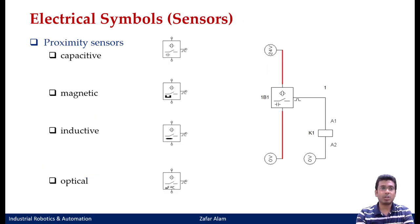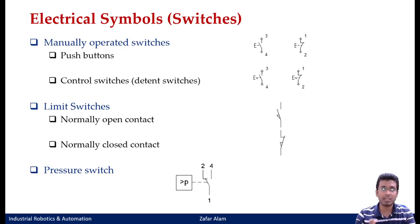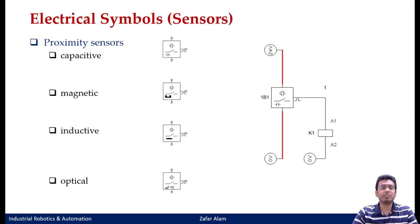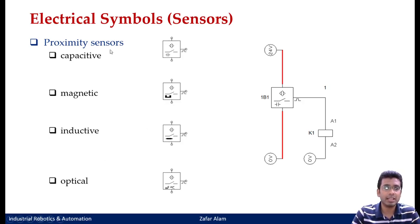We will go on to electrical symbols for sensors. When showing these circuit diagrams, it is not that only these many components exist — you have a variety of components, but due to time constraints, we will limit our discussions to a few general switches and sensors commonly used in our practice problems. Some proximity sensors are shown here. For example, this is a capacitive sensor, this is a magnetic type, this one is inductive, and this one is optical. More or less, the symbolic representation of the sensors remains the same.